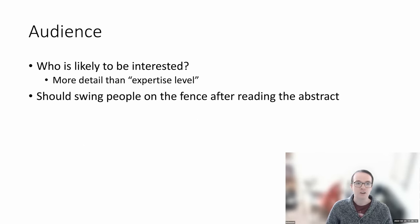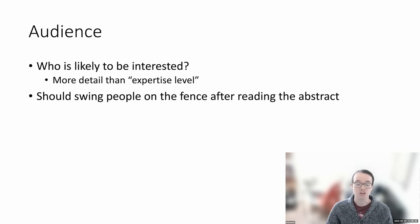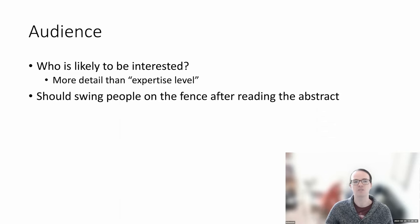The next field is audience — think about who in a community of research software engineers is going to be interested in what you're presenting. This is free text rather than a selection from three options, and gives more detail than the expertise level field. If anyone is on the fence about whether they're interested after reading the abstract, this should help them make their decision — either realizing it's targeting a different group from what they needed, or confirming that it's exactly what they were looking for.